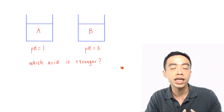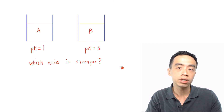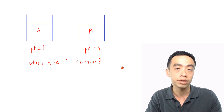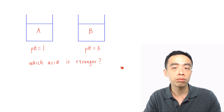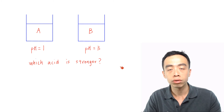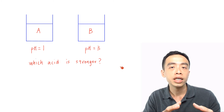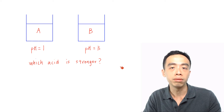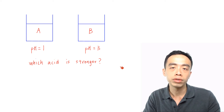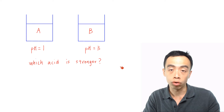Now if you think that acid A is the stronger acid because it has a lower pH, that actually depends on the concentration of acid A as well as acid B. If A and B have the same concentration and A is the stronger acid, then A will dissociate in solution to give more H⁺, so therefore you have a lower pH. So in this case, if the concentrations of A and B are the same, then yes, it is true that if A has a lower pH, then it means that A is a stronger acid.